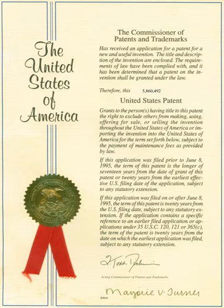Although there is some evidence that some form of patent rights was recognized in ancient Greece in the Greek city of Sybaris, the first statutory patent system is generally regarded to be the Venetian Patent Statute of 1474. Patents were systematically granted in Venice as of 1474, where they issued a decree by which new and inventive devices had to be communicated to the Republic in order to obtain legal protection against potential infringers. The period of protection was ten years.